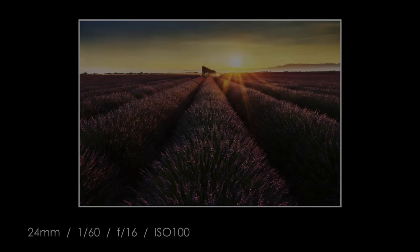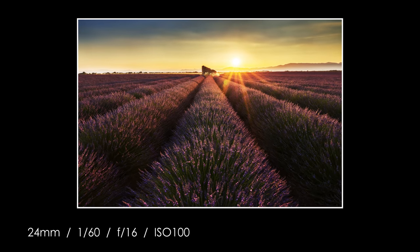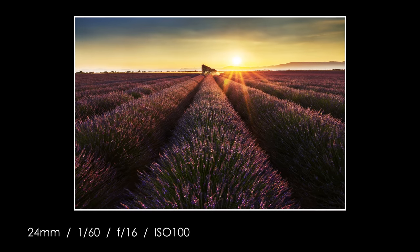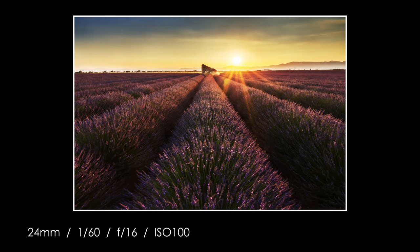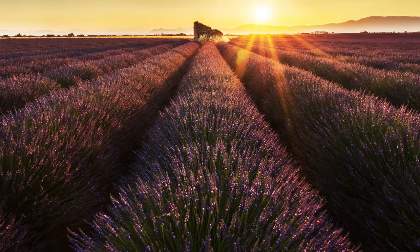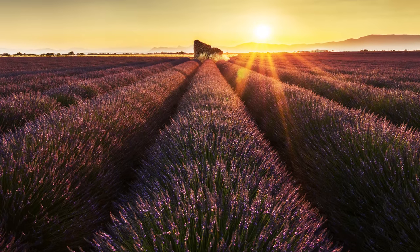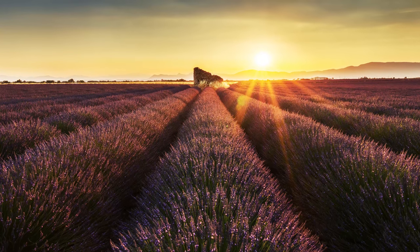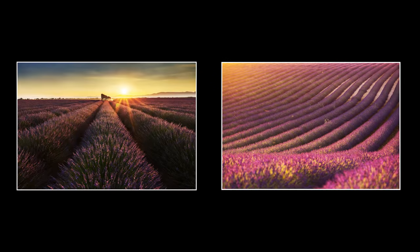In this first example at 24mm from the lavender fields in Valenzol, I use the lines of lavenders as leading lines leading into the small ruin in the middle of the frame. Due to the focal length, the foreground lavenders are emphasized and larger relative to the background. Compared to a 200mm photo, the lavenders in the 24mm become smaller sooner as you move further into the background.